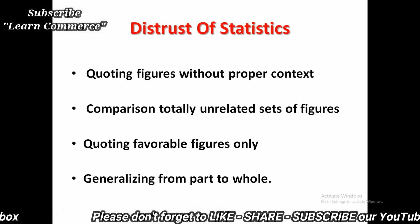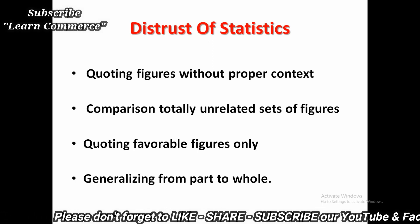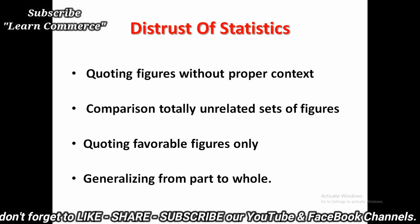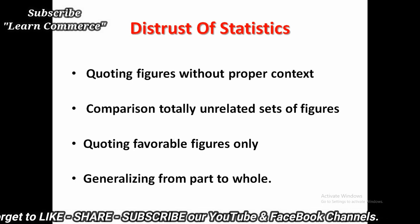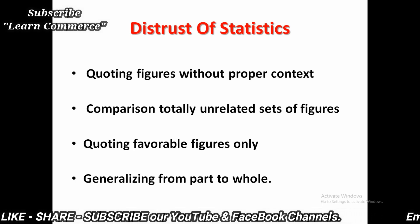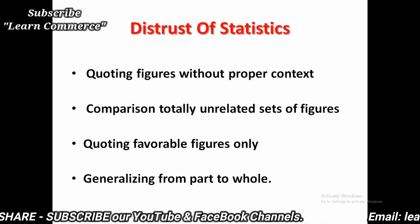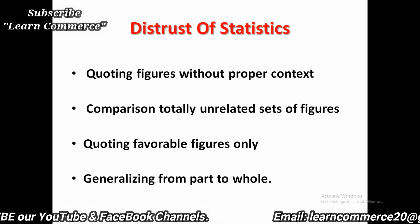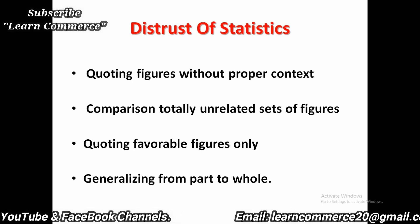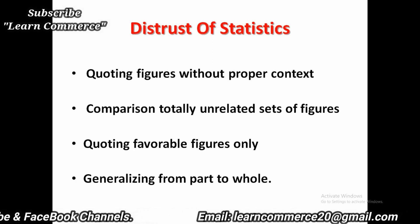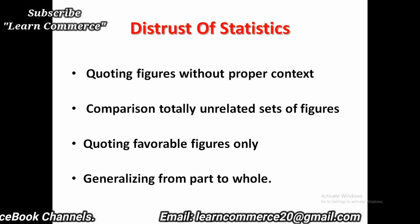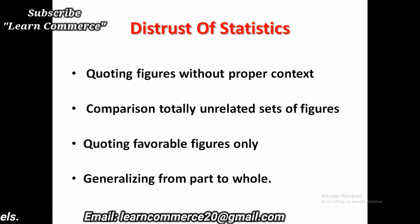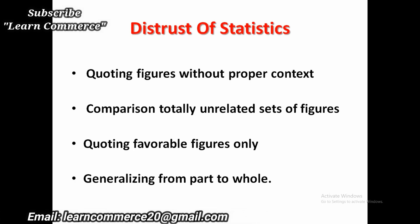The extent of distrust is known from the following statements. First, statistics can prove anything. And there are three degrees of lies — lies, damned lies, and statistics. Validity of statistical data depends on the methods of their collection, the sources from which they are collected, and the purpose they are intended to serve. Statistics must be subjected to careful scrutiny before inferences are drawn.